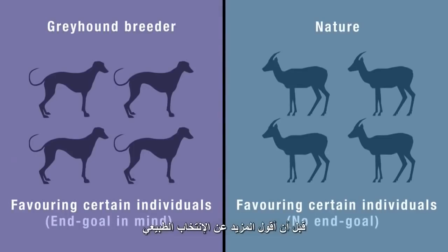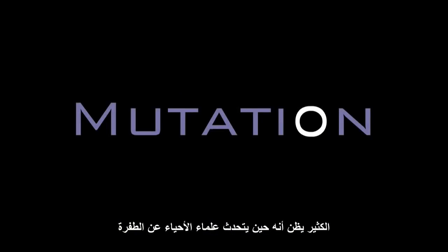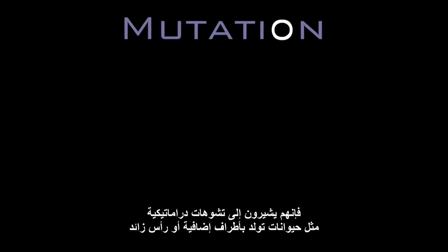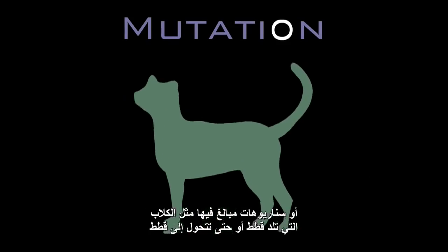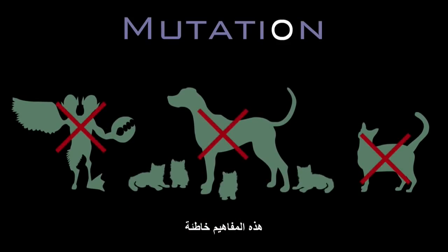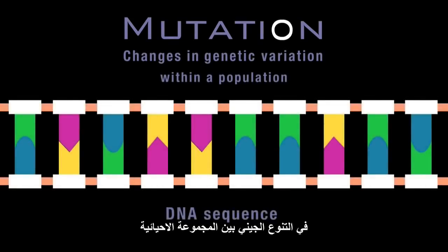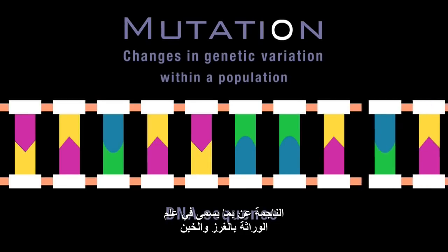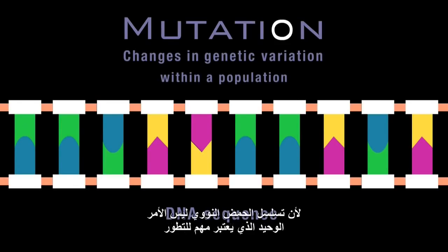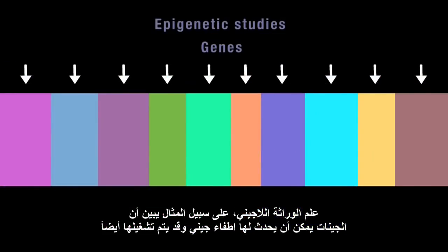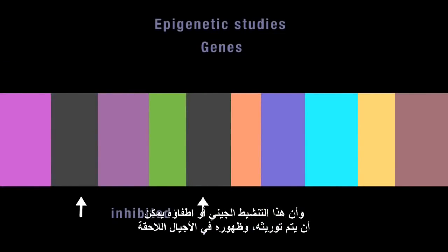Before saying more about natural selection, I want to mention another commonly misunderstood term: mutation. Many think that when biologists talk about mutation, they're referring only to dramatic malformations like animals with extra limbs or heads, or far-fetched scenarios like dogs producing cats, or even morphing into cats. These are misconceptions. Mutations are simply changes in genetic variation within a population, brought about by insertions, deletions and recombinations of the DNA sequence. But mutation isn't the only cause of variation. Epigenetic studies show that genes can be switched on or off, and that this genetic activation or inhibition can be inherited and expressed in later generations.